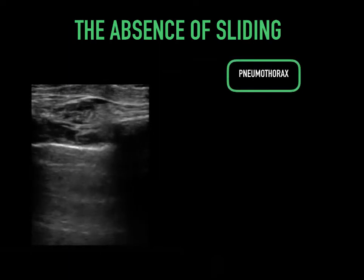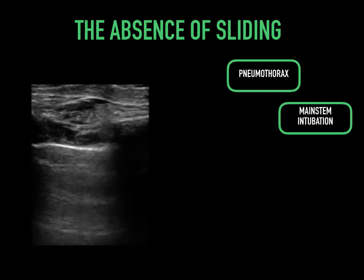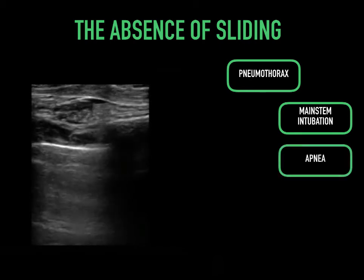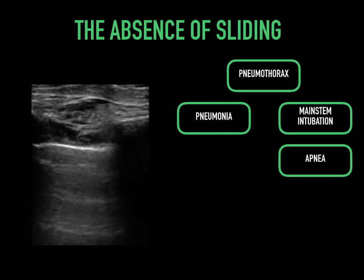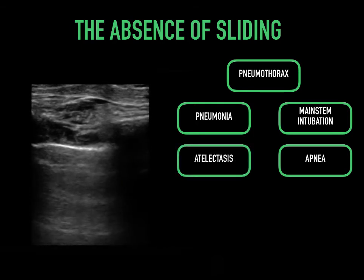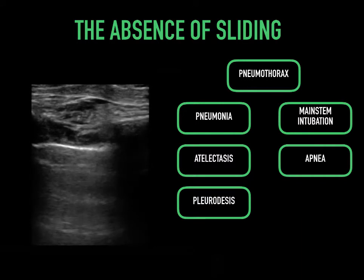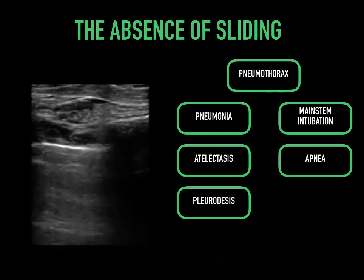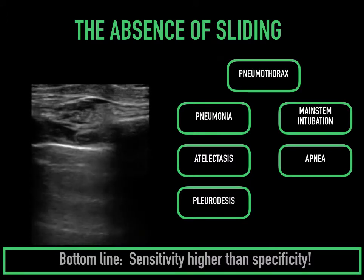The absence of sliding is a little more nuanced. Obviously pneumothorax, which makes sense because there is no pleural apposition. Mainstem intubation — if you intubate the right mainstem you'll have no sliding on the left. Apnea stands to reason. Pneumonia can also cause generally focal loss of sliding in selected areas associated with some consolidation or dense B lines. Atelectasis can frequently occur at the bases in a critically ill patient. Finally, pleurodesis — if a patient has had a thoracotomy, they may have absence of lung sliding, particularly post-empyema. The sensitivity is higher than the specificity.